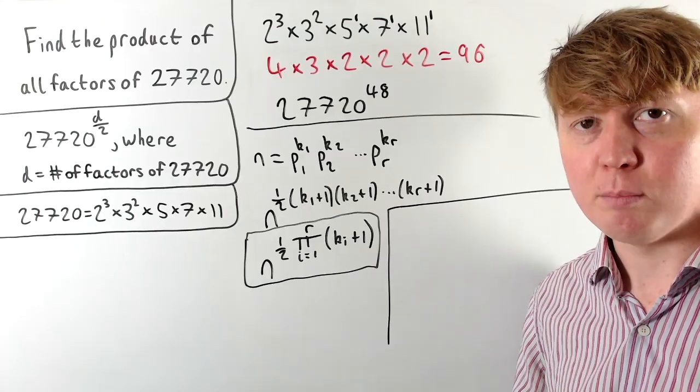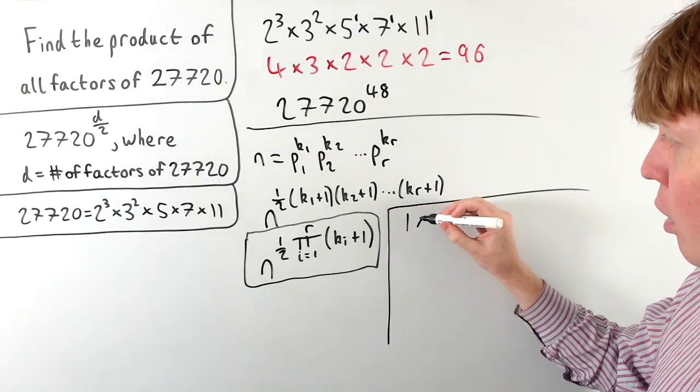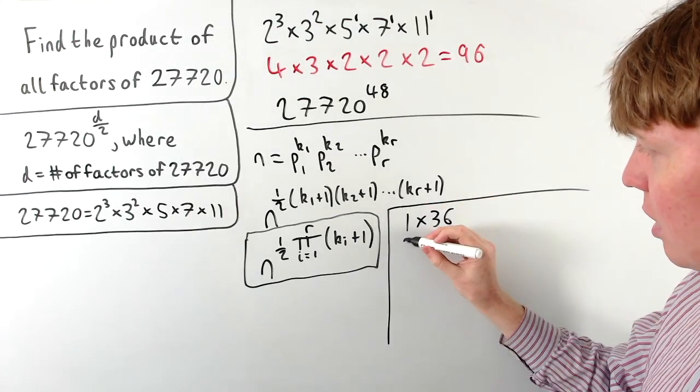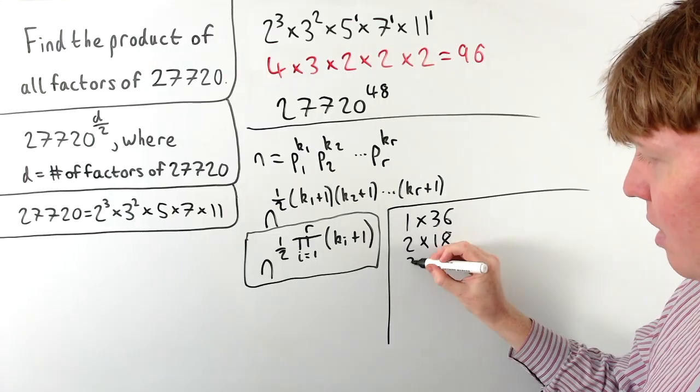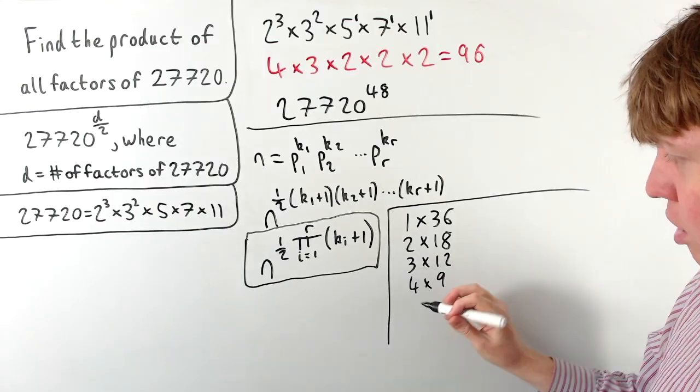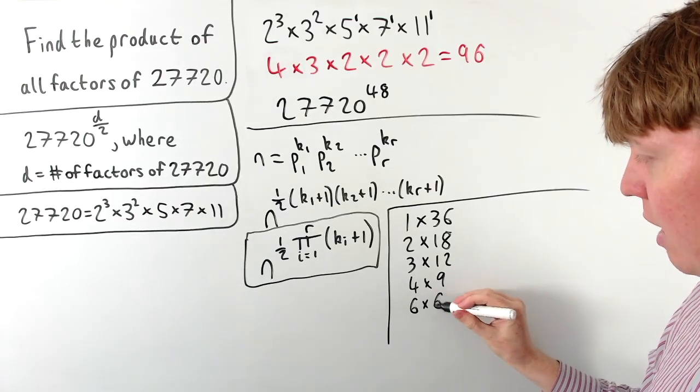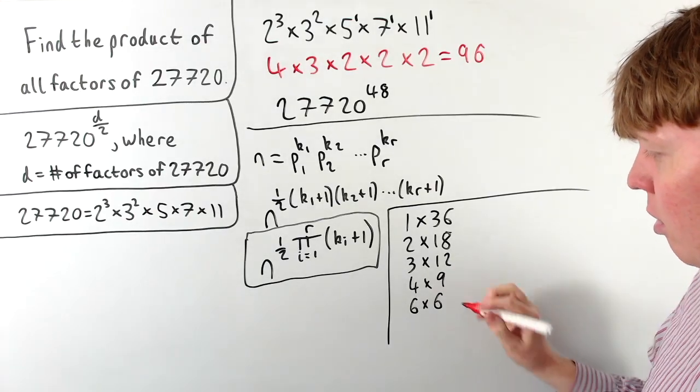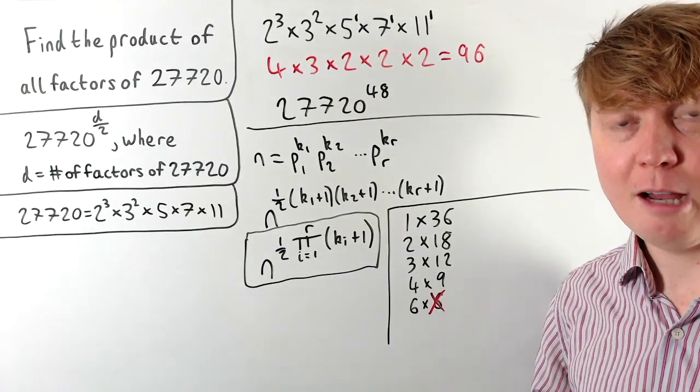So just to illustrate this with an example, let's look at 36. So we can write this as 1 times 36, 2 times 18. So all of the factor pairs come in twos, but the only exception is when you have a square number, so here where we've got the 6 times 6, we don't need to include this 6 towards our count.